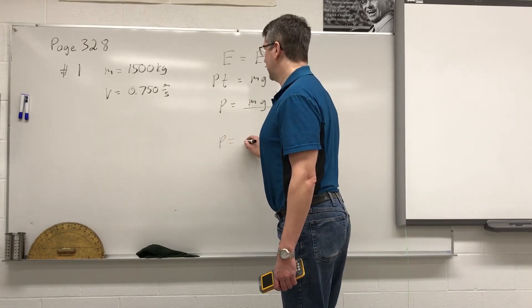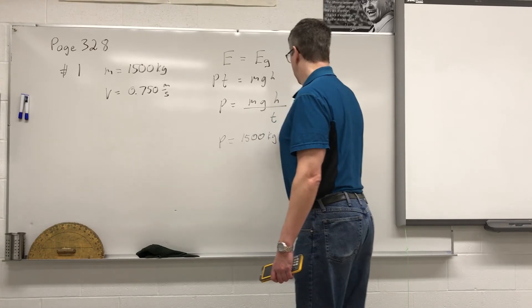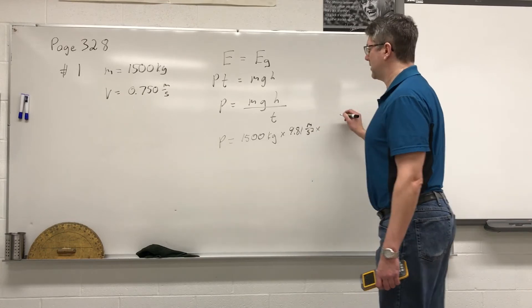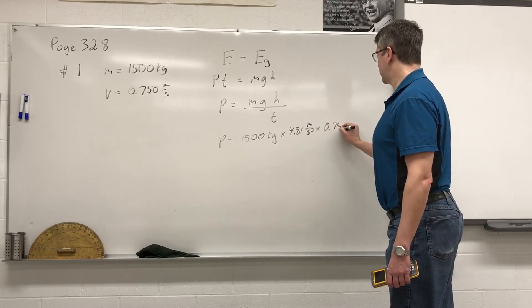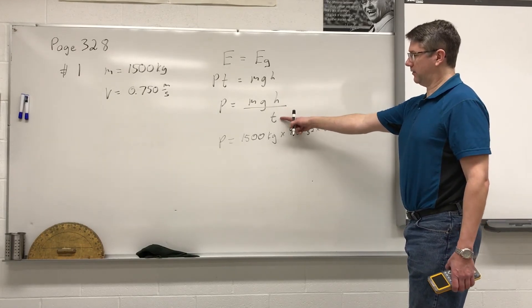So our power will equal 1,500 kilograms times 9.81 meters per second squared times our speed 0.750 meters per second. And again, that's our height divided by our time.